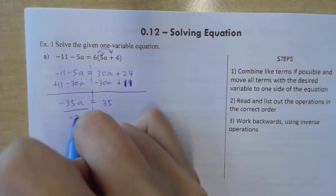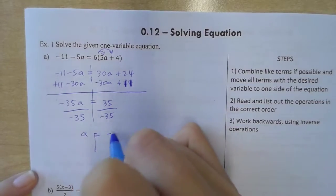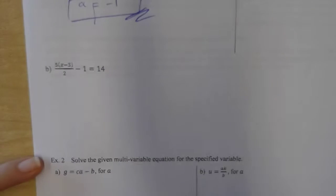I got 35. Now I must divide both sides by negative 35. So then a is equal to negative 1. Done.